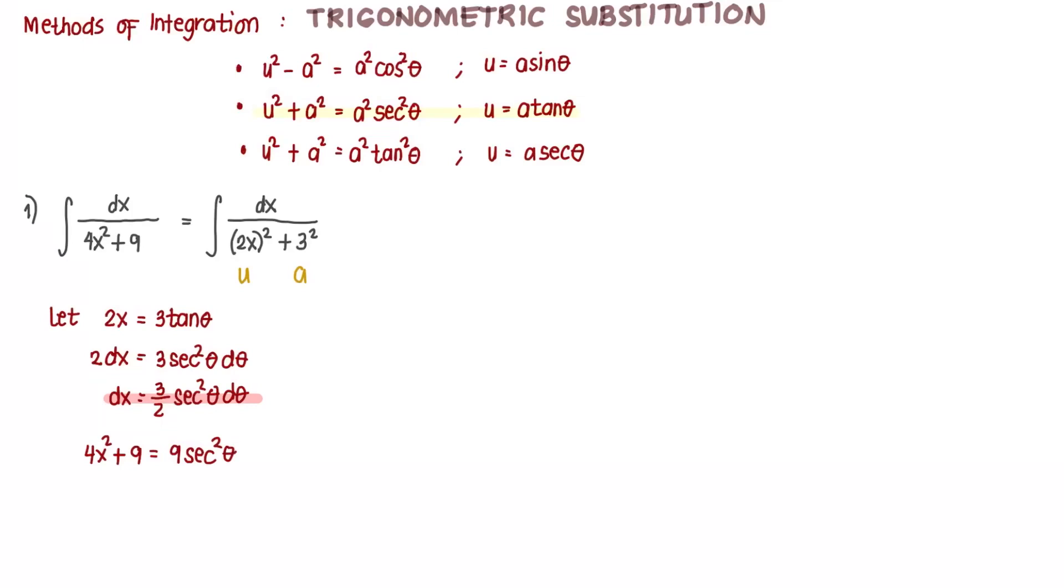So we can now rewrite our given as: dx is 3 halves secant squared theta d theta, and the denominator 4x squared plus 9 is 9 secant squared theta. So we cancel, 3 halves divided by 9 is equal to 1 over 6. So this is 1 over 6 integral of d theta.